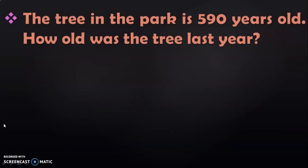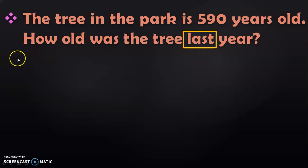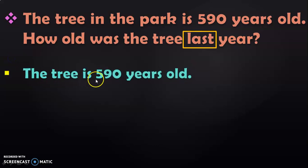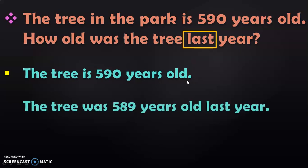Let us move on to the next example. The tree in the park is 590 years old. How old was the tree last year? First, identify the keyword in the word problem. The keyword in this problem is 'last', which means previous. So we will have to find out the previous number of 590. Let us write down the statements: the tree is 590 years old. The previous number of 590 is 589. So the answer is: the tree was 589 years old last year.